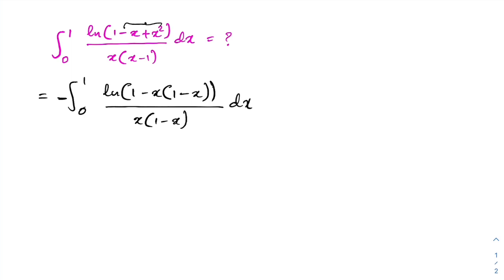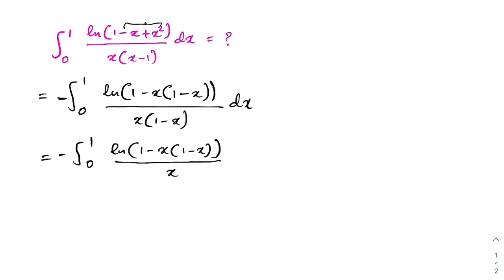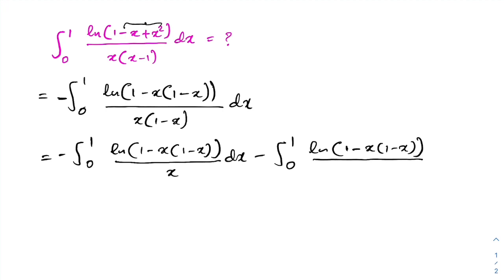Then we can split our integral into two different integrals. So here we have minus integral from 0 to 1, natural log of 1 minus x times (1 minus x) over x dx. Then again minus integral from 0 to 1, natural log of 1 minus x times (1 minus x) over (1 minus x) dx. Now if we simplify these two integrals, we have again this integral.